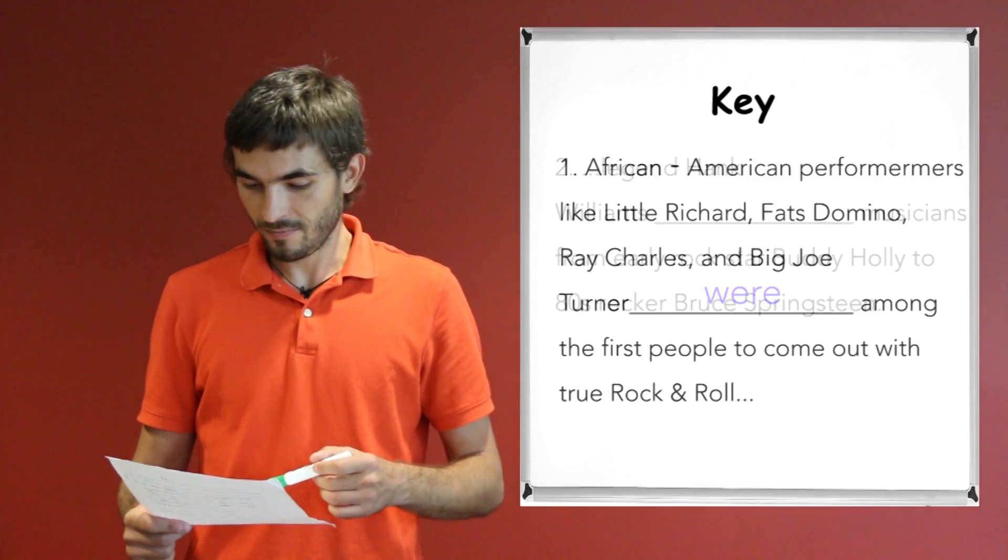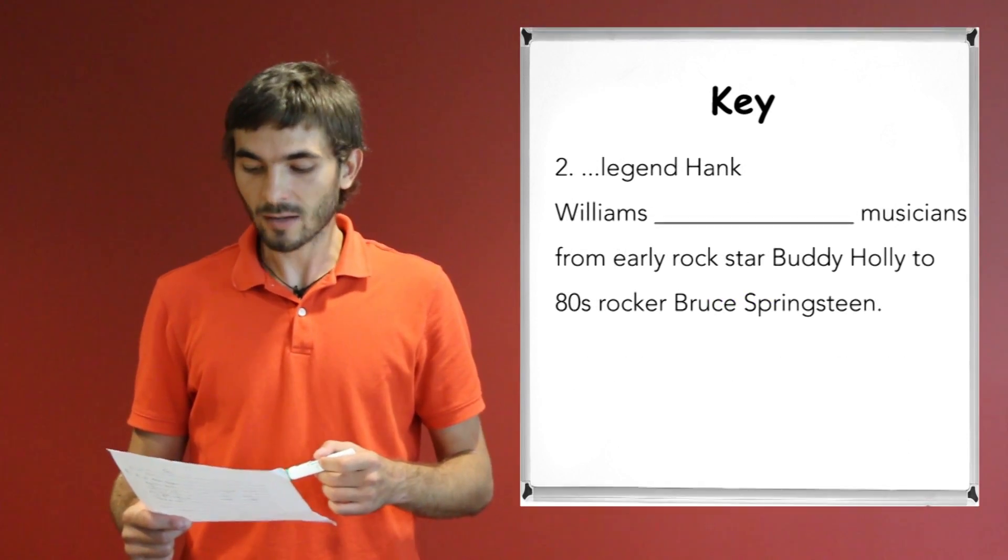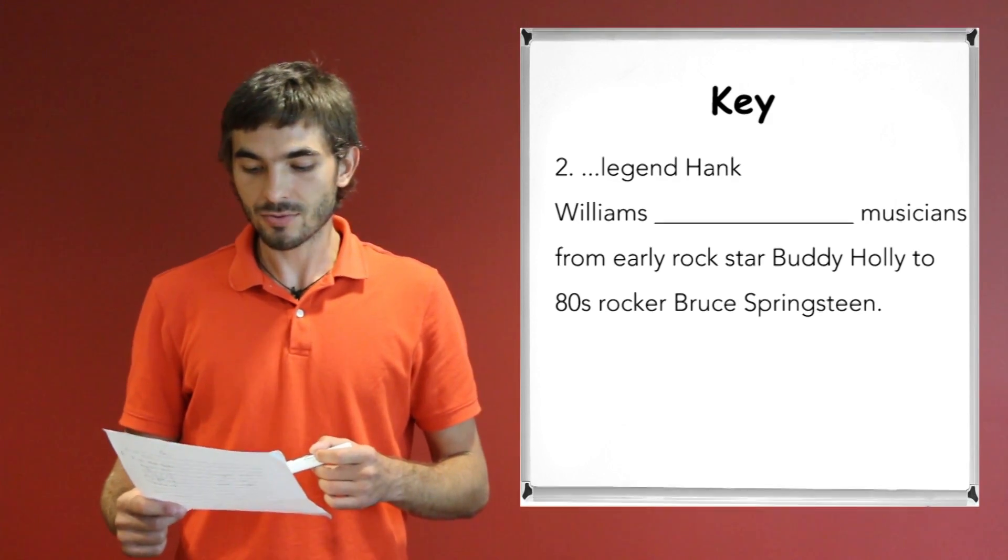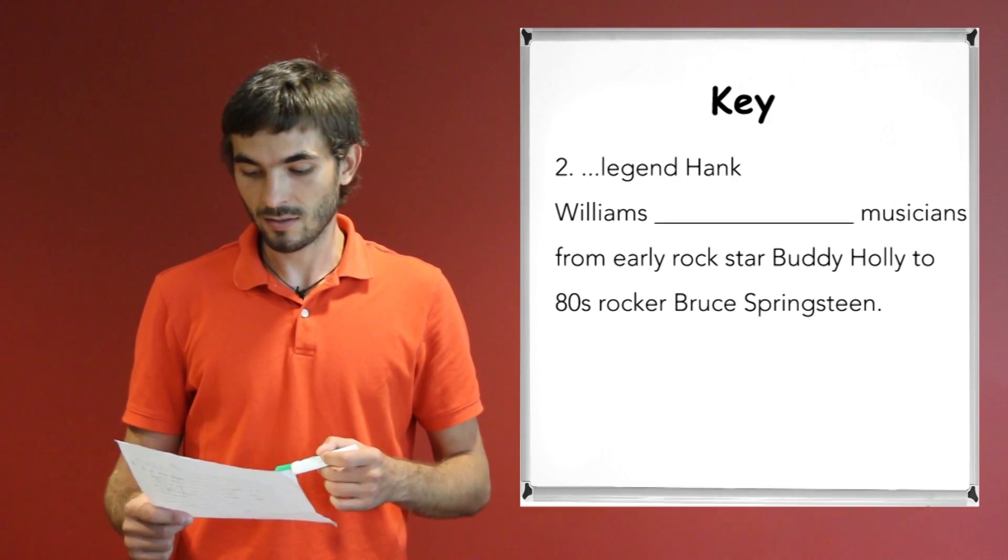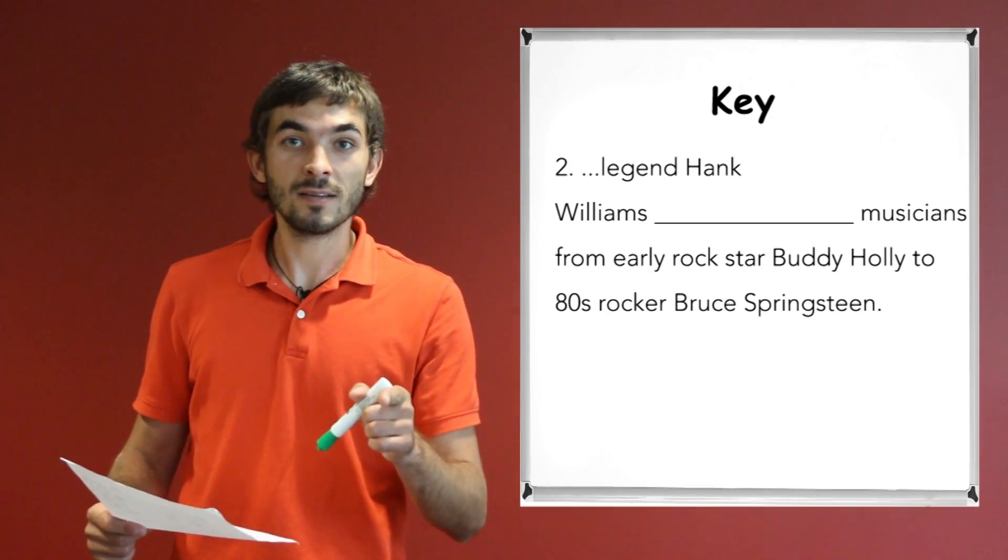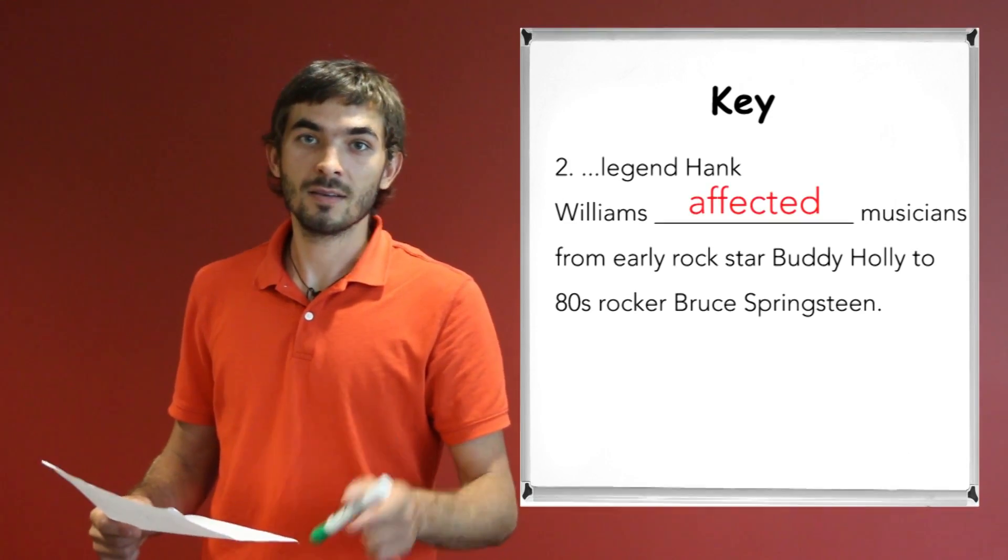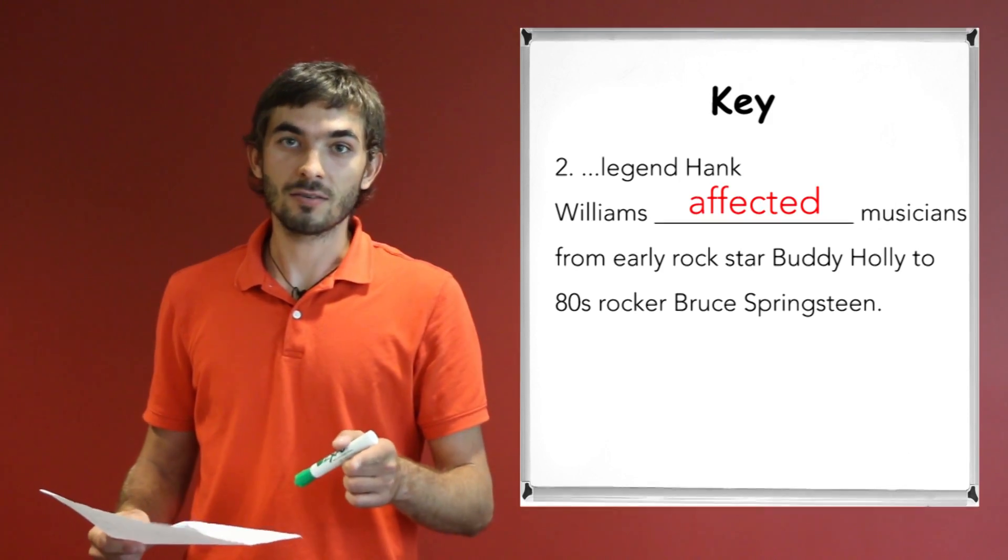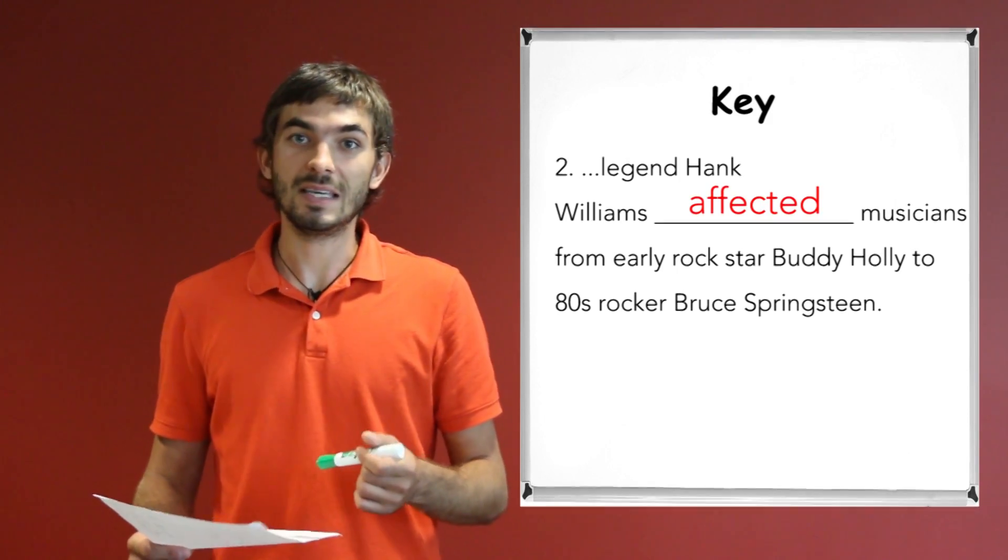Let's see the next one. Legend Hank Williams affected musicians from early rock star Buddy Holly to 80's rocker Bruce Springsteen. The verb is what? Affected. Correct, yeah. Is it regular verb or irregular? Regular, that's correct, because it has the suffix -ed.